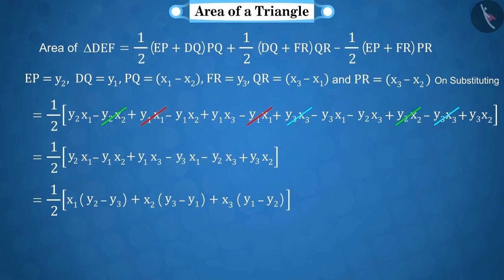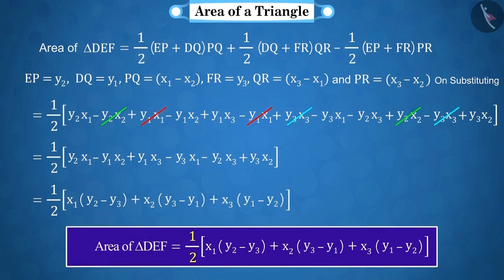On solving it we get 1 by 2 multiplied by x1 multiplied by y2 minus y3 plus x2 multiplied by y3 minus y1 plus x3 multiplied by y1 minus y2.